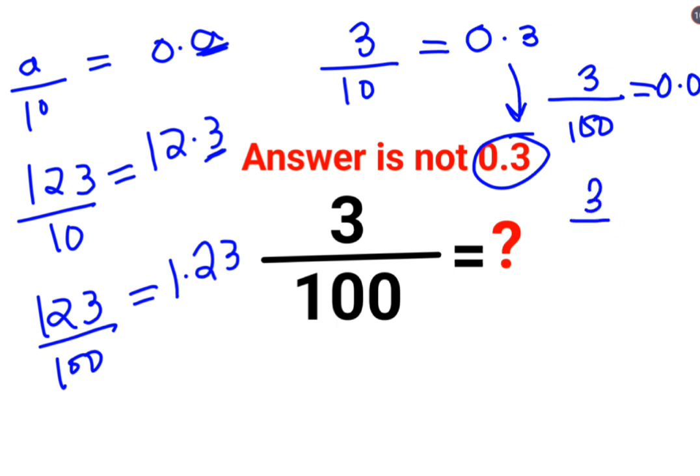Similarly, if we had divided 3 by 1000, it would have been 0.003. So the answer for this question mark is supposed to be 0.03.